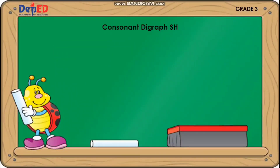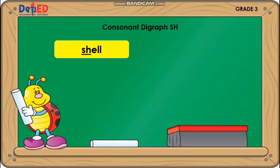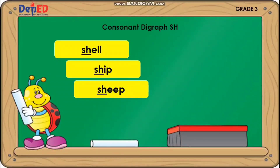Consonant digraph SH. The following are words that begin with consonant digraph SH: Shell. Ship. Sheep.